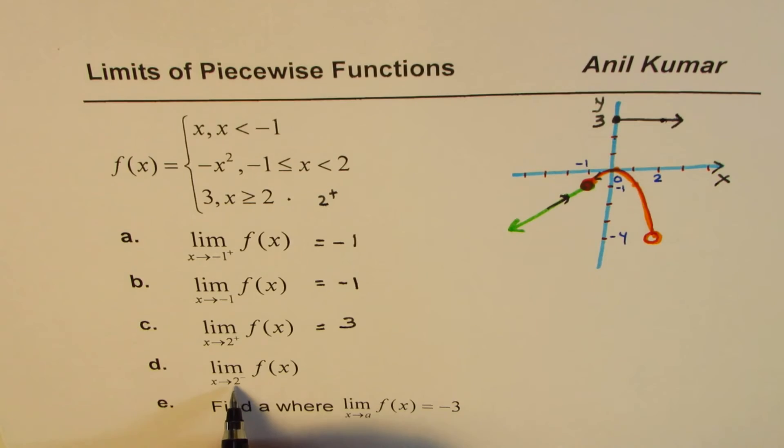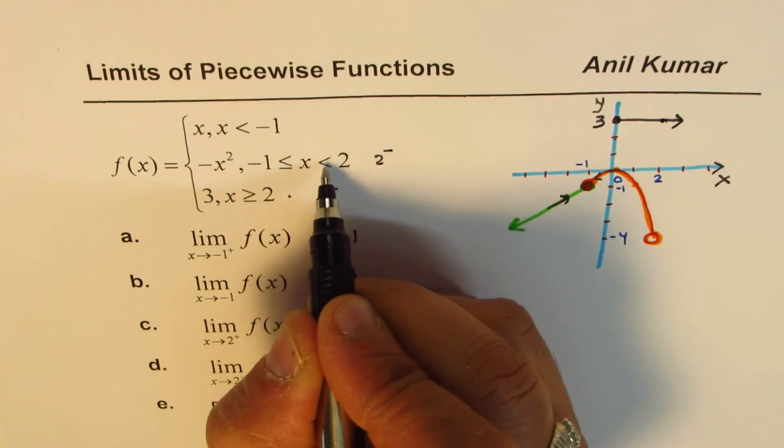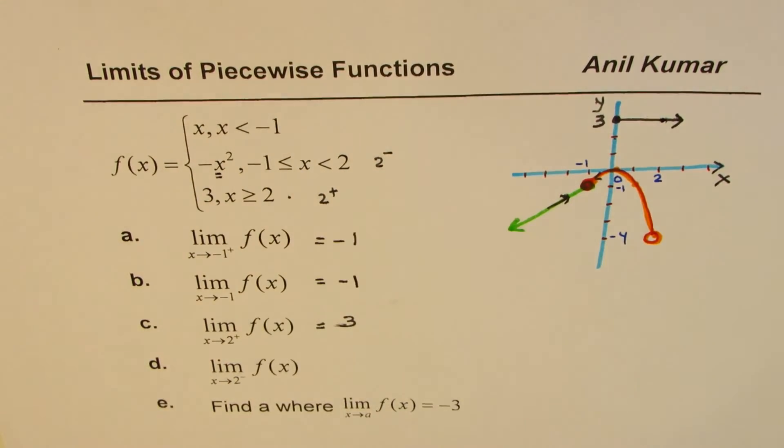Now we have x approaches 2 from left side. So left side means it is less than 2. So this portion is for left side, less than 2. So we have to look into x² value. Where does it approach,